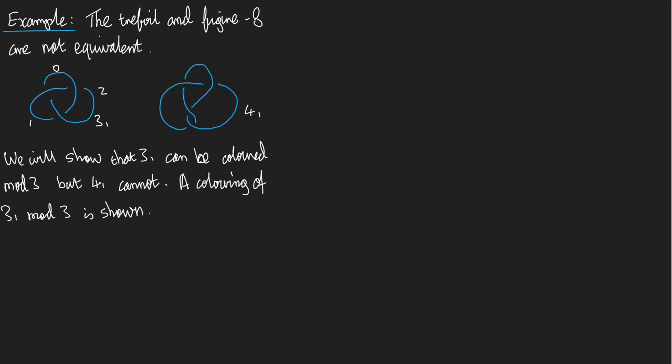Let's check that it is a coloring by checking the coloring equations at the crossings. So what goes on at the green crossing? The coloring equation says that 0 plus 2 should be congruent to 2 times 1.